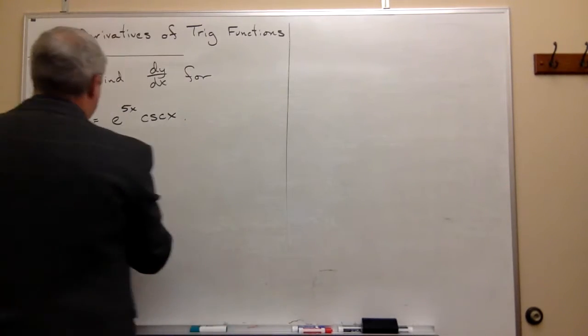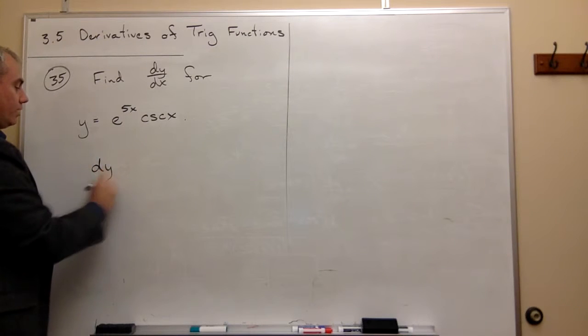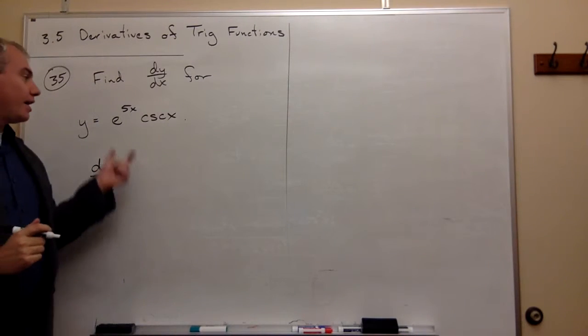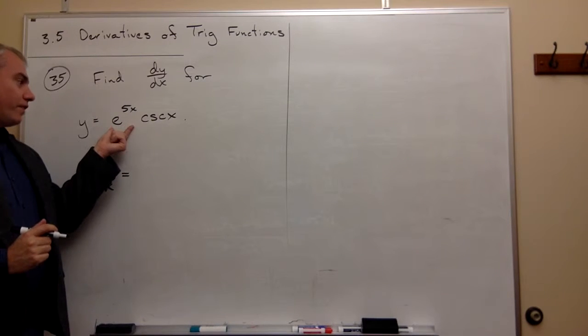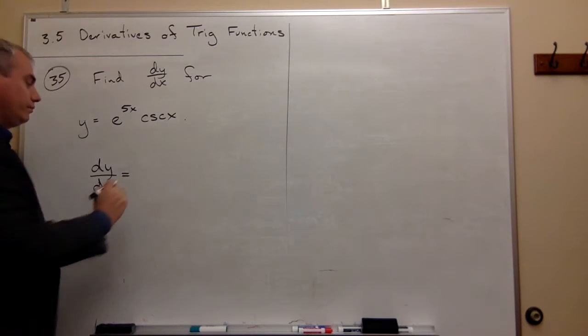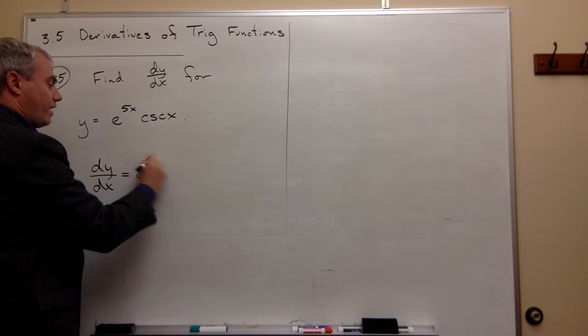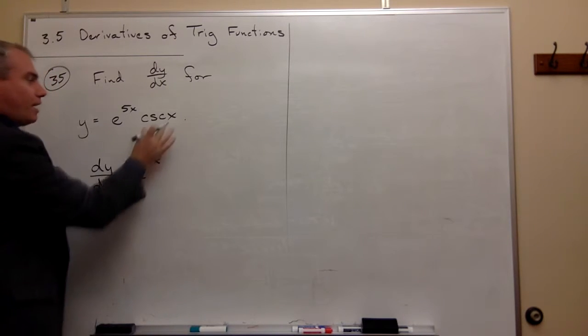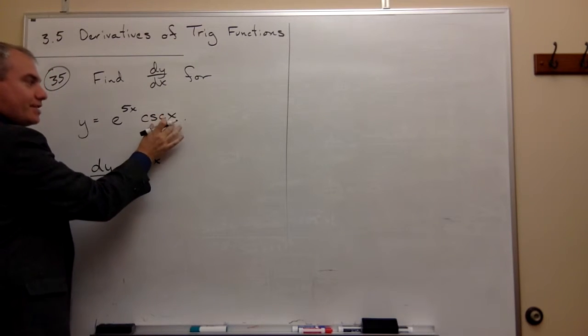So when I start taking this derivative, dy over dx, then I know I'm going to start by taking the first function and leaving it alone, so I'll write e to the 5x, multiplied by the derivative of the second function.